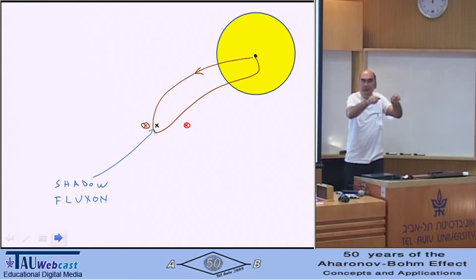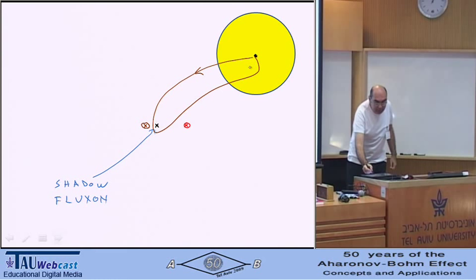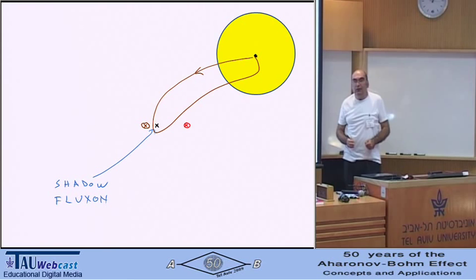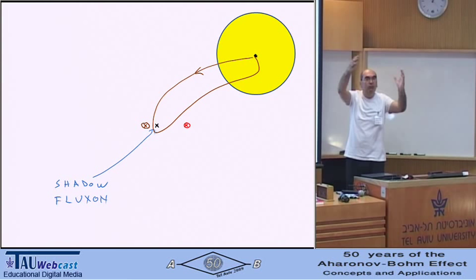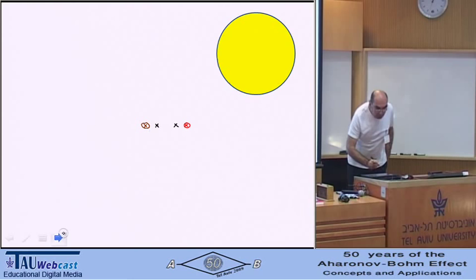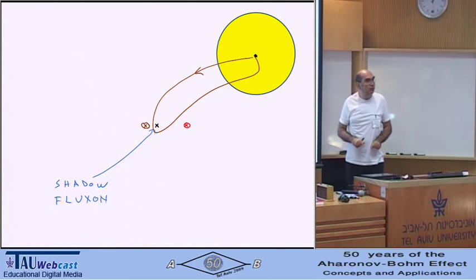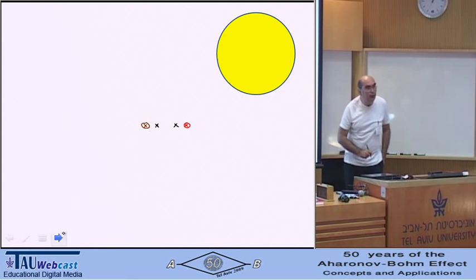Suppose I move now this charge distribution while I keep the two half fluxon at the distance that I just discussed. Now, when this charge distribution comes such that its center surrounds that point, it will accumulate a minus one. Why? Because when the charge was there, it was a degenerate situation. So now you have like an Aharonov-Bohm in which this big atom that you may imagine, this cloud of charge goes, and picks a phase of minus one when it surrounds a shadow, and that is the shadow over there. In fact, by symmetry, there must be another shadow over here.